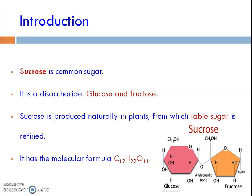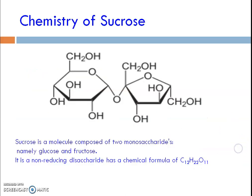Coming to the introduction — sucrose is a common sugar. It is a disaccharide, meaning it consists of two units of monosaccharide. Sucrose contains two monosaccharide units, mainly glucose and fructose. Sucrose is mainly produced naturally in plants — that is, cane sugar from which table sugar is refined. It has a molecular formula C12H22O11.